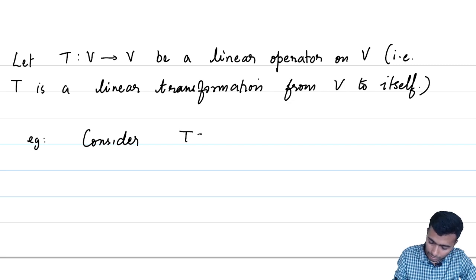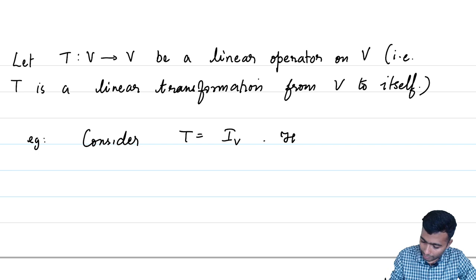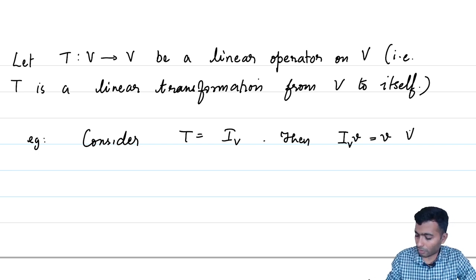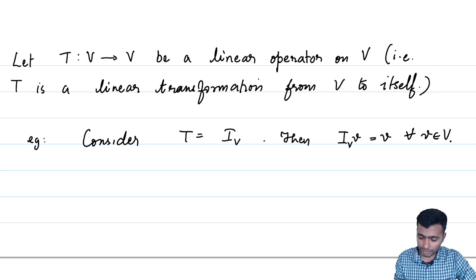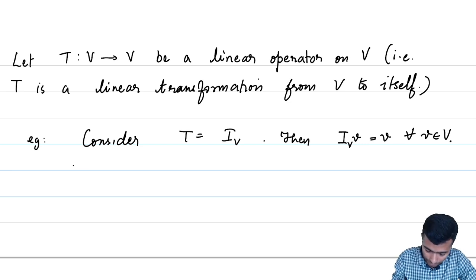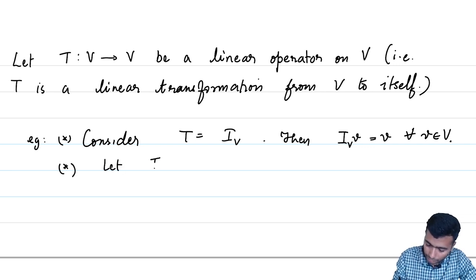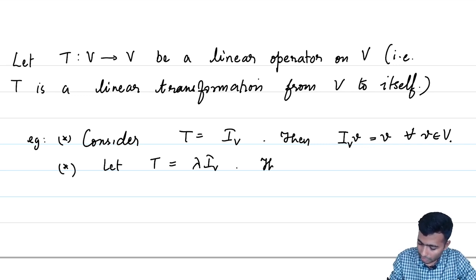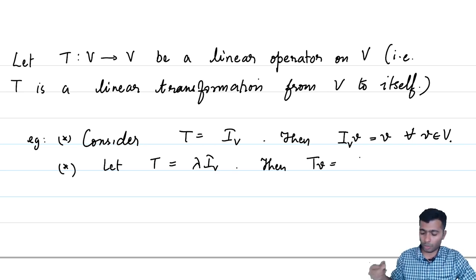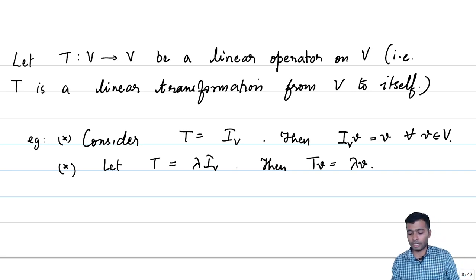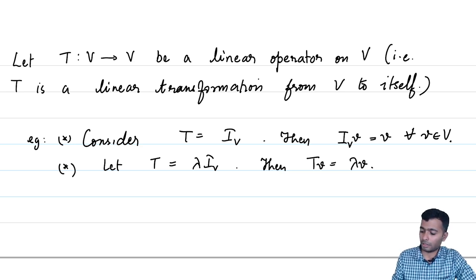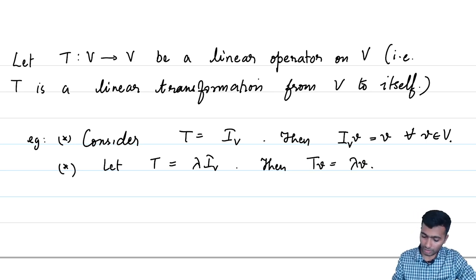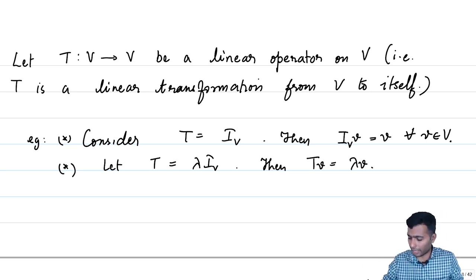Consider T equal to the identity map of V. Then I_V(v) equals v for all v in V. Another simple example is a scalar multiple: let T equal lambda times I_V. Then T(v) = lambda * I_V(v) = lambda * v. So the identity map dilates every vector by 1, leaving it fixed, and the second example dilates every vector by lambda.